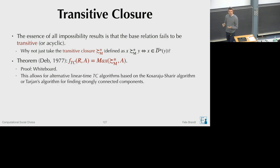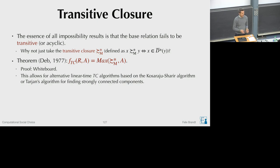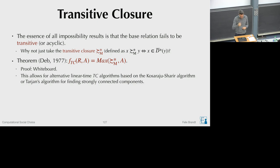One consequence of this equivalence is that instead of the Copeland-winner-based algorithm from last time, we could use classic computer science algorithms. We could use the Floyd-Warshall algorithm to compute the transitive closure and then take the maximal elements, or alternatively use algorithms that compute strongly connected components. In the directed acyclic graph of strongly connected components of the majority graph, the top cycle is the highest component. But since we already found a linear time algorithm last time, there's not really a need for alternatives.